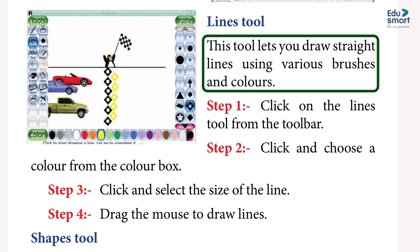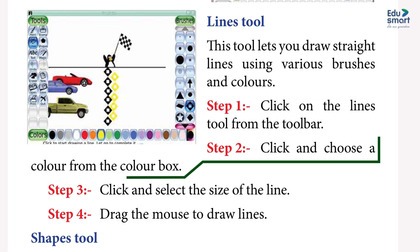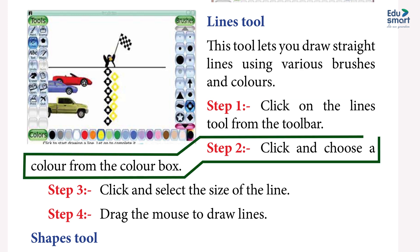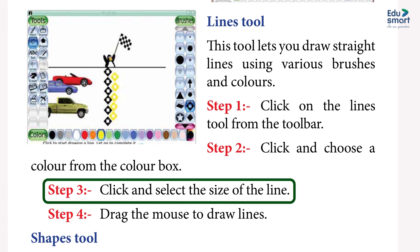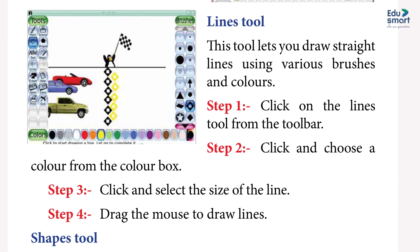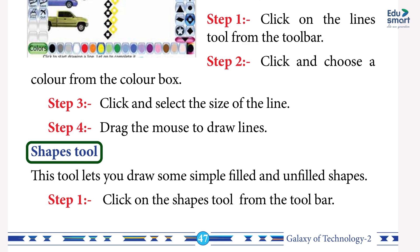Steps for the Lines tool: Step 1: click on the Lines tool from the toolbar. Step 2: click and choose a color from the color box. Step 3: click and select the size of the line. Step 4: drag the mouse to draw lines.